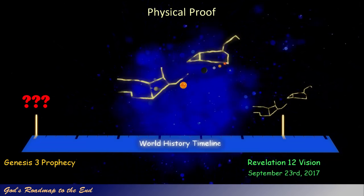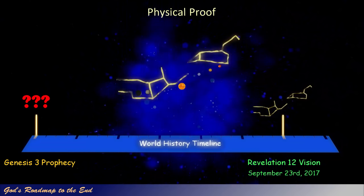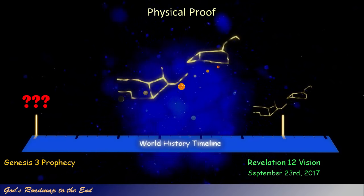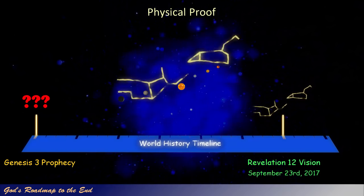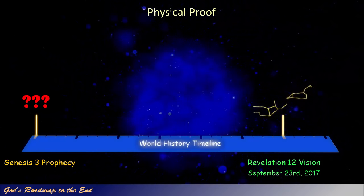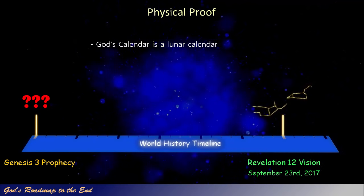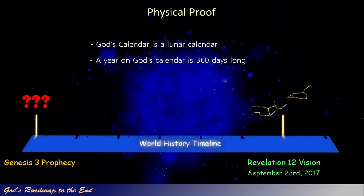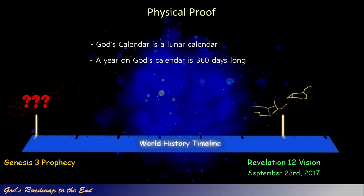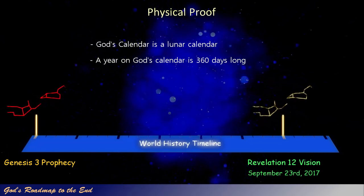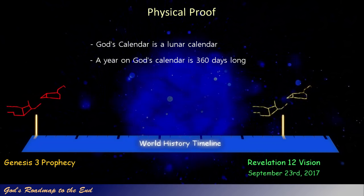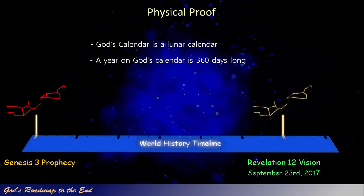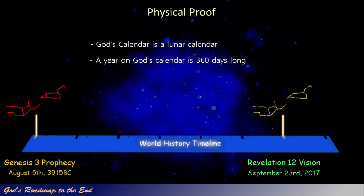Since no information is provided in the Bible between the creation of man and man falling into sin, it is logical to conclude that the prophecy given by God in Genesis 3 must have occurred shortly after the creation narrative. When we look at time from God's perspective, we know that God uses a lunar calendar when determining years, and that a year in God's word is 360 days long. As I searched for this marker around 6,000 Biblical years ago, I was amazed to find that God did indeed mark the prophecy with the same celestial configuration as described in Revelation 12. This event is found to have occurred on August 5th, 3915 BC.